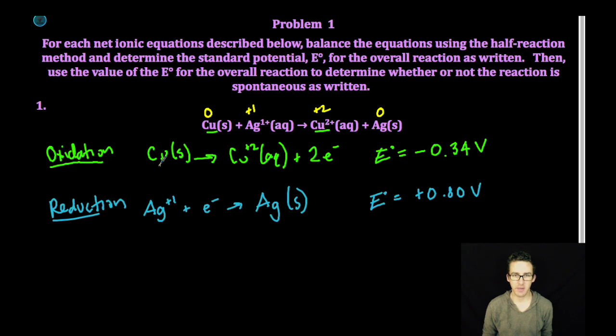I always want to make sure that my masses are balanced. I've got the same number of coppers on each side, the same number of silvers on each side. So I'm balanced for mass. Now I have to balance for charge. Since I am losing two electrons here but only gaining one electron here, I need to multiply my reduction reaction by two. Although remember, we're not multiplying the voltage.